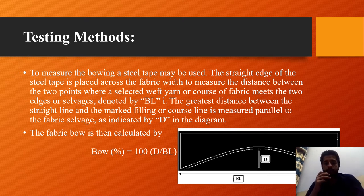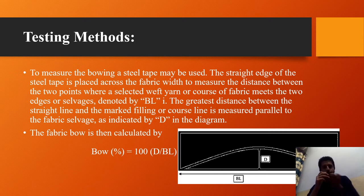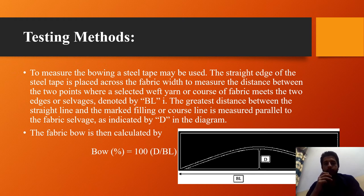To measure bowing, a steel tape may be used. The fabric edge of the steel tape is placed across the fabric to measure the distance between the two points where a selected fill yarn or course of the fabric meets the two edges — noted as BL in the figure. The greatest distance between the fabric straight line and the marked filling or course line is measured parallel to the fabric selvage, indicated by D in the diagram. The fabric bow is then calculated by the formula: 100 × D / BL.